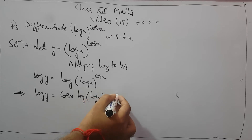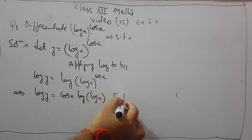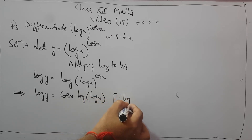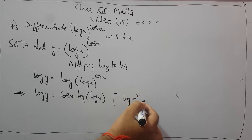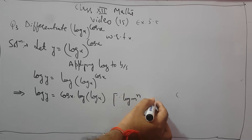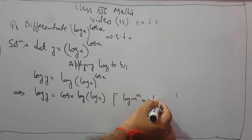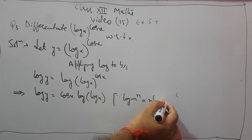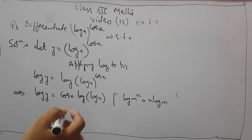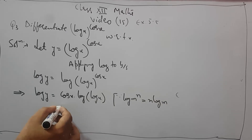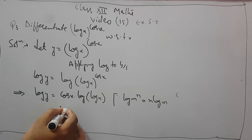Which property is this? The property is log of m raised to power n equals n log m, so n comes first. This is the property of log that I have already explained. After that we will differentiate.